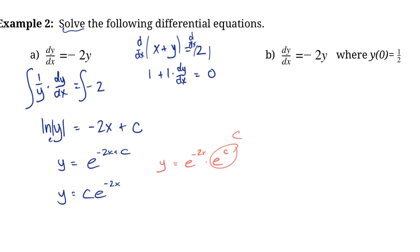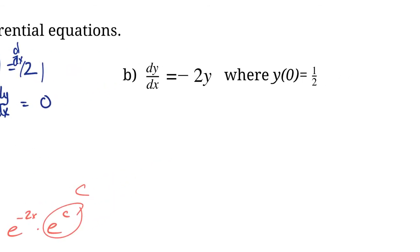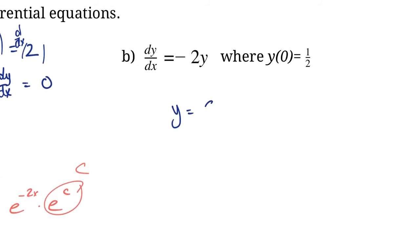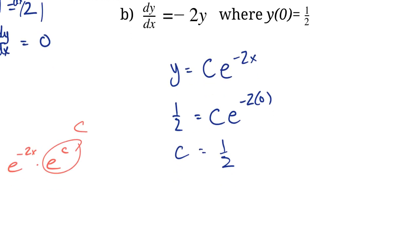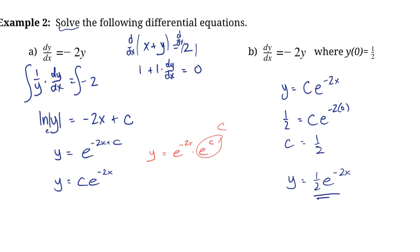The next question asks the same equation but with the condition y at 0 equals one-half. We can find the specific c value. We know y equals c e to the negative 2x, and y at 0 is one-half. So one-half equals c times e to the power of negative 2 times 0. Since e to the 0 is 1, that tells us c equals one-half. Our final equation is y equals one-half e to the negative 2x. This is simpler to work with if we have c in front rather than in the exponent.